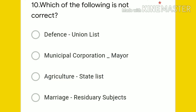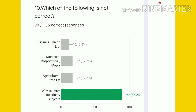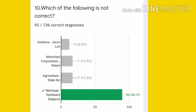Tenth question: which of the following is not correct? Options include defense under union list, municipal corporation with mayor, agriculture under state list, and marriage under residuary subjects. The answer is marriage under residuary subjects — that pairing is not correct.